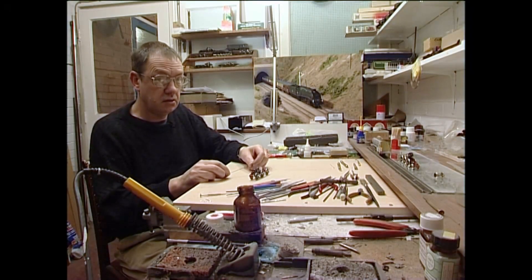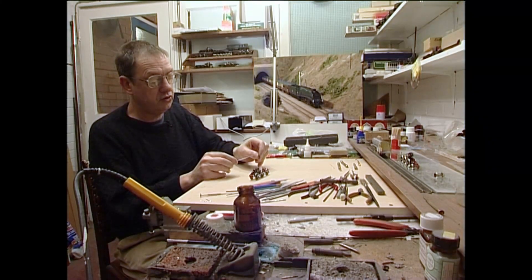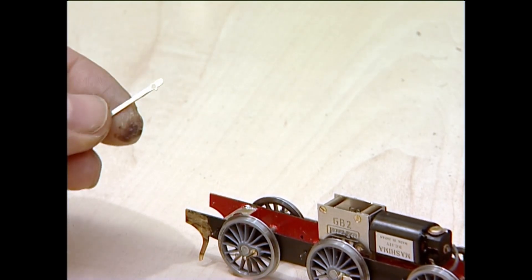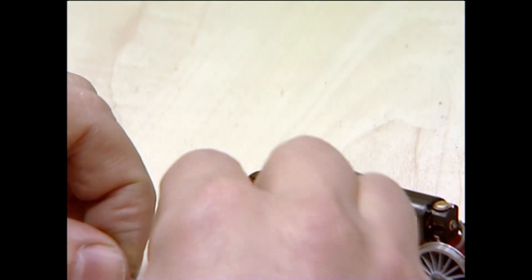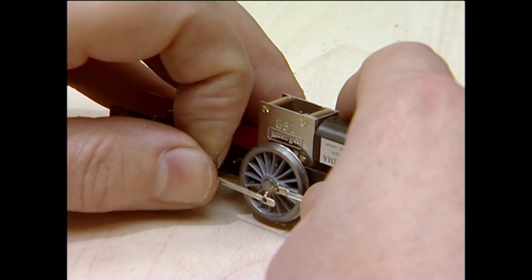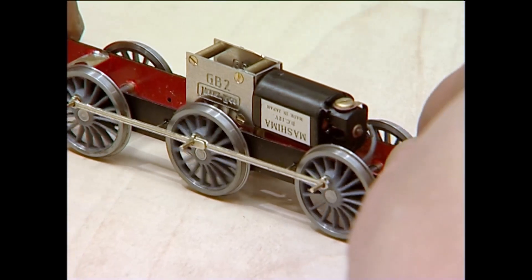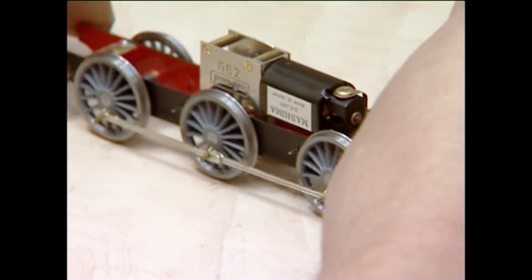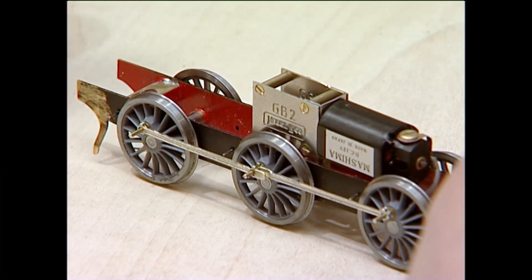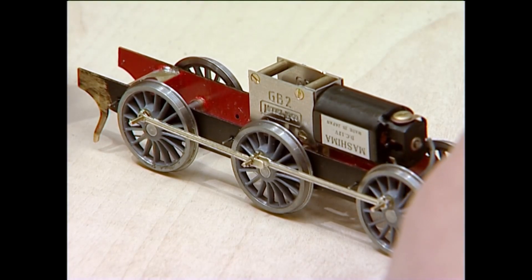Now, quartering the Alan Gibson wheel isn't quite as easy as the Romford wheel, but it isn't that difficult. This is a Midland built 4F and Midland locomotives had right-hand leads. So, the same principles. I've fitted one wheel to its axle. Now, the trick is to look through the spokes for the quartering to get 90 degrees.